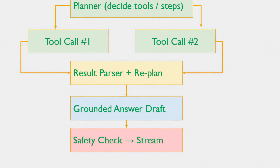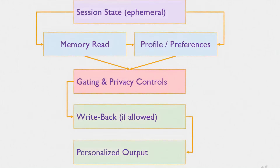GPT-5 doesn't just respond in the moment. It can keep a session state, like temporary notes, to track what's happening in the current conversation. And if you allow it, it can also read from a longer-term memory or profile, which might include your preferences or recurring context. But everything passes through gating and privacy controls that decide exactly what can be read or written. If permitted, the assistant can even do a write-back at the end of a conversation, saving helpful facts for the future. Memories are opt-in and auditable, giving you continuity when you want it, while strong guardrails keep your data safe.